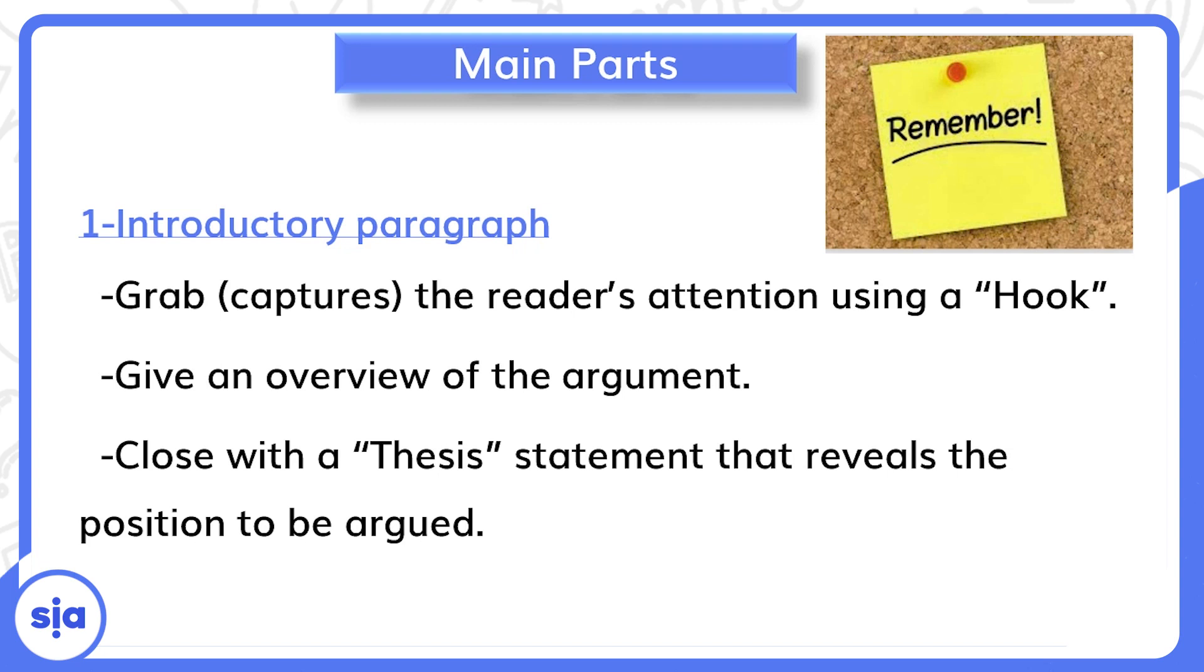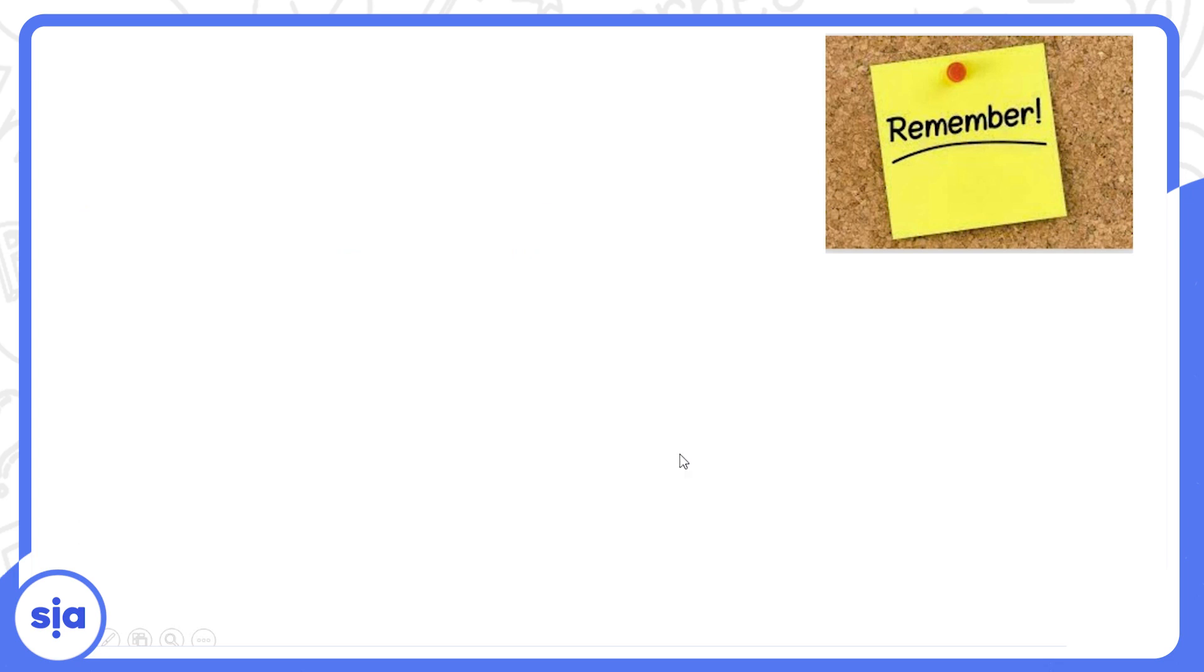And then give an overview of the argument. There's a little debate, I have an opinion and other people have another opinion, so from here the debate arises. I begin to give a small overview about the debate surrounding this topic. And then close with a thesis statement that reveals the position to be argued. I close my introduction with the thesis statement in which I talk about my position regarding the topic being debated.